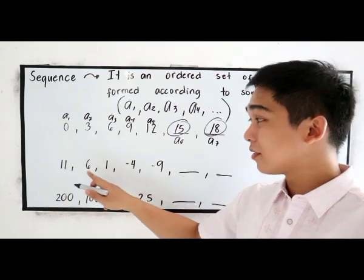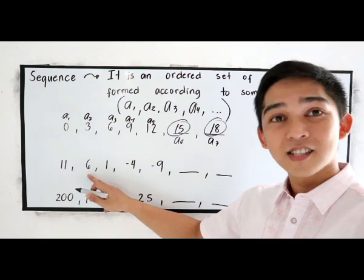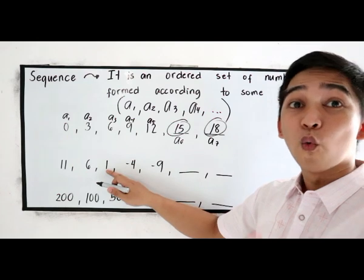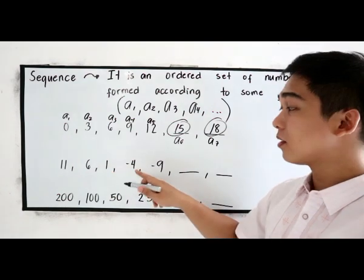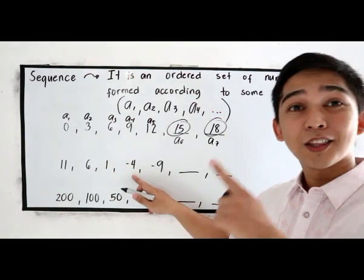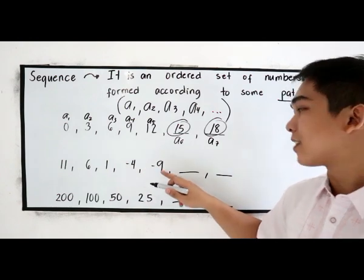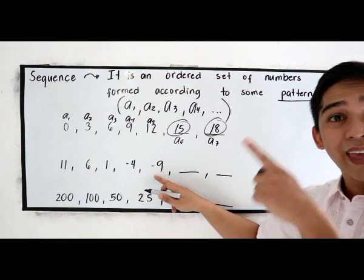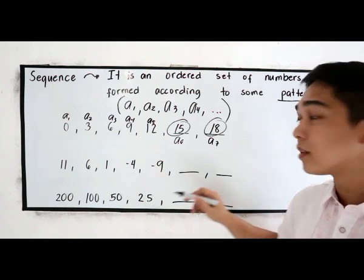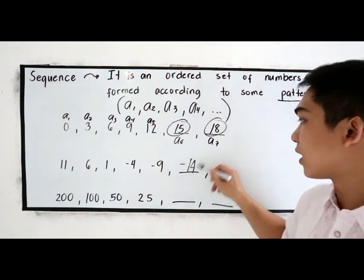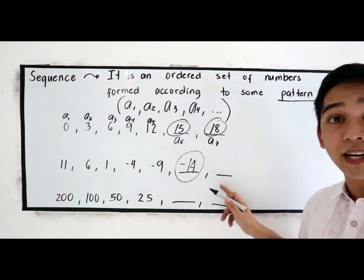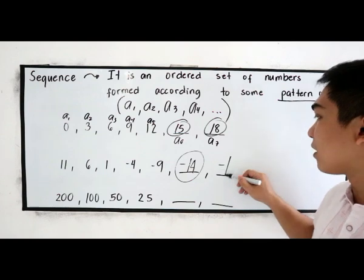So 11 minus 5, that is 6. 6 minus 5, that is 1. 1 minus 5, negative 4. Negative 4 minus 5, negative 9. So the next term is negative 9 minus 5, negative 14. Next to negative 14 is negative 19.